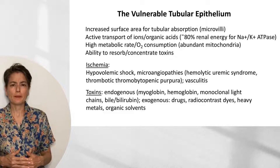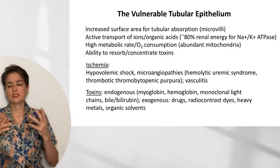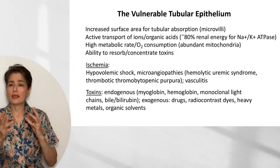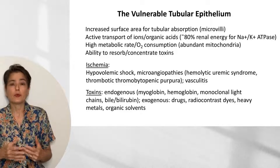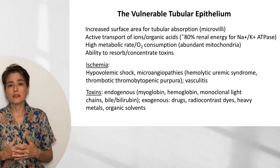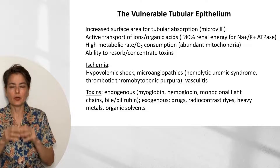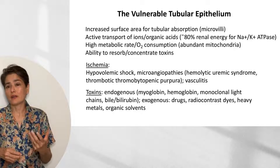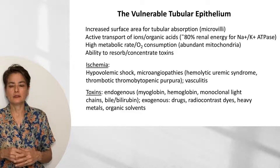Why is tubular epithelium so vulnerable? The kidney is a hard-working organ — it and the liver are probably your hardest working organs, both heavily involved in removing toxins. Tubular epithelial cells have an incredibly increased surface area for tubular absorption from all their microvilli, and they are actively transporting ions and organic acids. They receive a lot of cardiac output and need to use ATP for the sodium-potassium ATPase, so they are using a lot of energy.